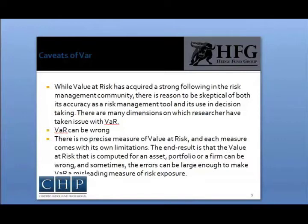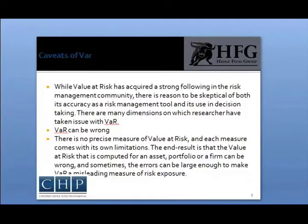History may also not be a good predictor. All measures of Value at Risk use historical data to some degree or another. In the variance-covariance method, historical data is used to compute the variance-covariance matrix that is the basis for the computation of value at risk. In historical simulations, the VAR is entirely based upon historical data, with the likelihood of losses computed from the time series of returns. In Monte Carlo simulations, the distributions don't have to be based on historical data, but it is difficult to see how else they could be derived. In short, any value at risk measure will be a function of the time period over which the historical data is collected.